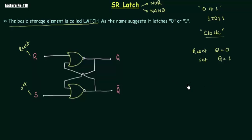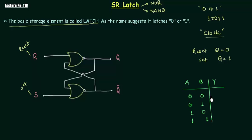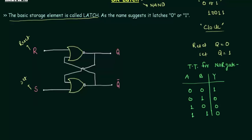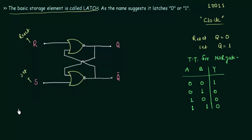Let's make the truth table for the NOR gate. With two inputs A and B and output Y, we have 4 possible combinations. The outputs are: 0,0→1; 0,1→0; 1,0→0; 1,1→0. This is the truth table for the 2-input NOR gate, and we will use it in our analysis. I am going to analyze the circuit for different cases.